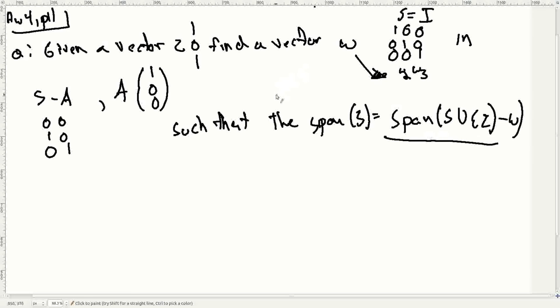And so if you're confused about this last little part, all you need to understand is that you're taking away a vector from s and you're replacing it with z and you need to maintain the original span.